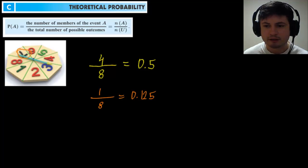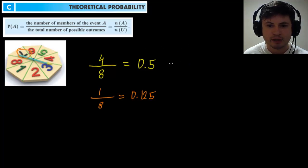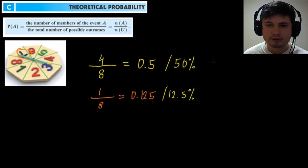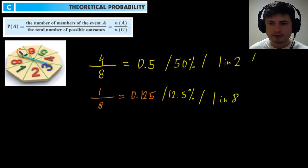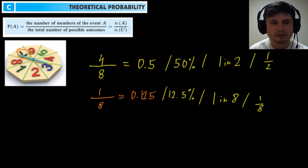Just a reminder — you can express this four different ways. It can be expressed as probability. It can also be expressed as chance: 50 percent chance or 12.5 percent chance. You can also express this as odds: one in two, or one in eight. Or you can express it as a fraction: one half, or one eighth. These are the four possible ways you can express your answer.